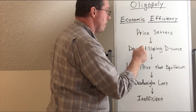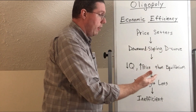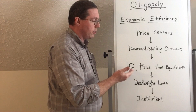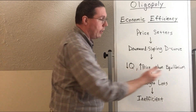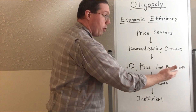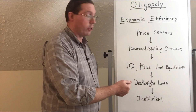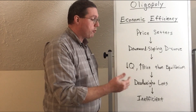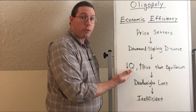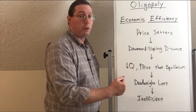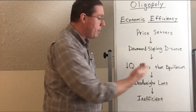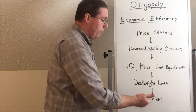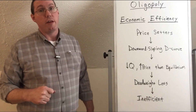Because oligopoly is facing a downward sloping demand curve, when they decide on the profit maximizing quantity, they are going to choose a quantity that is lower than equilibrium quantity — the efficient productive quantity in a market. And they're going to charge a higher price than equilibrium price. So because they're choosing a lower quantity and a higher price, there will be a deadweight loss and economic inefficiency in the market.